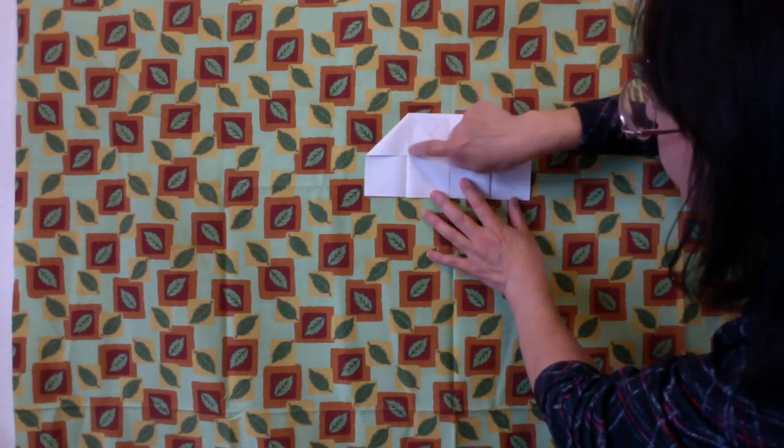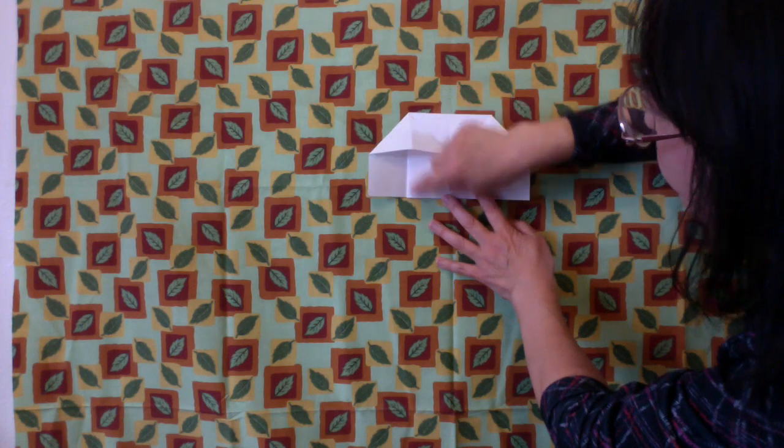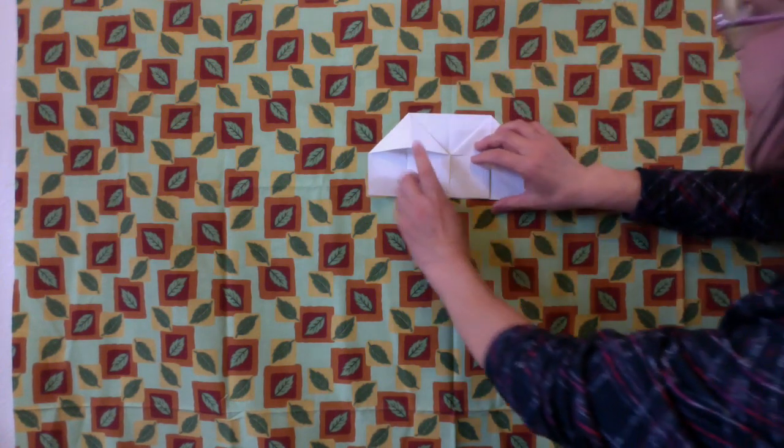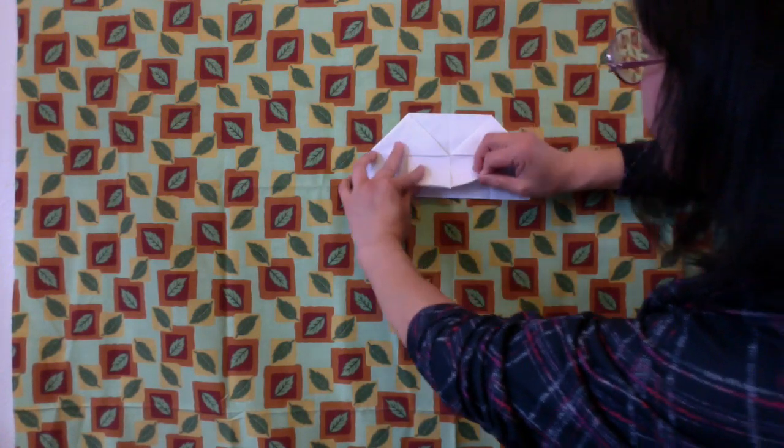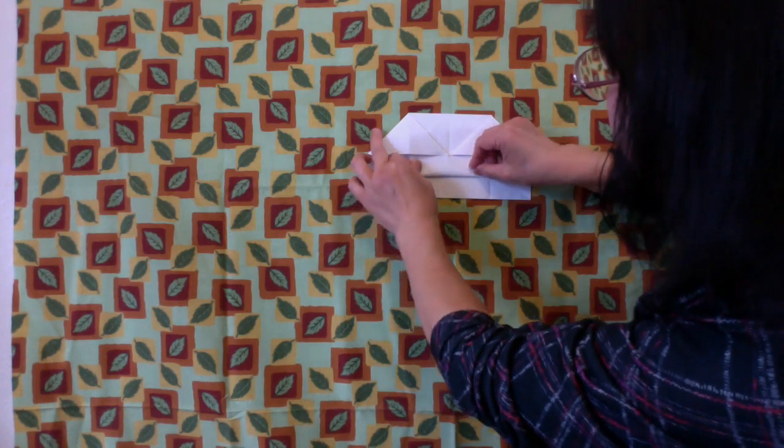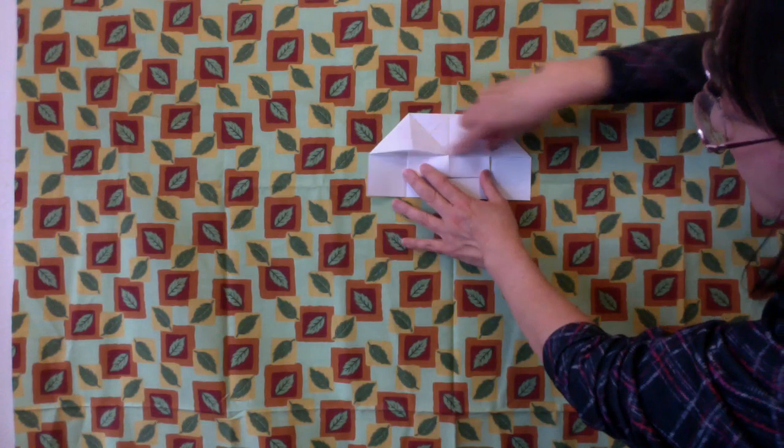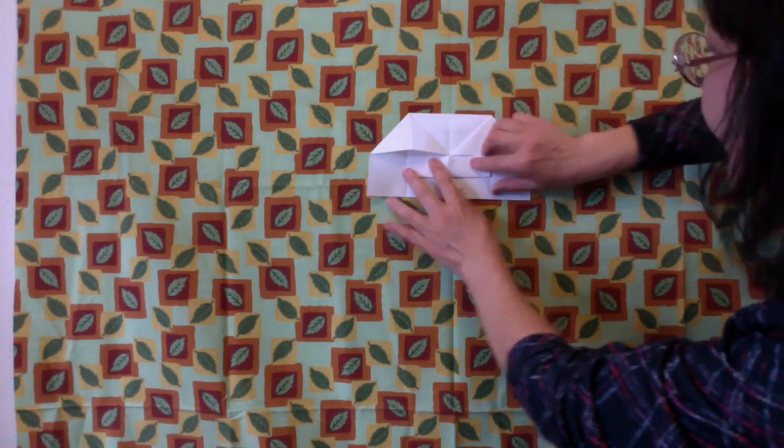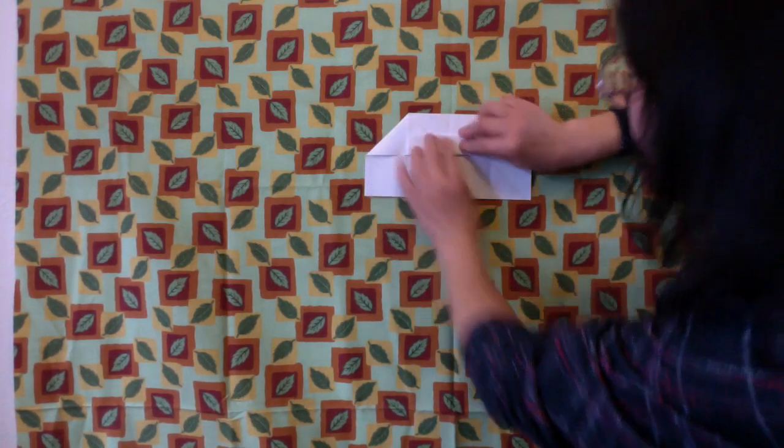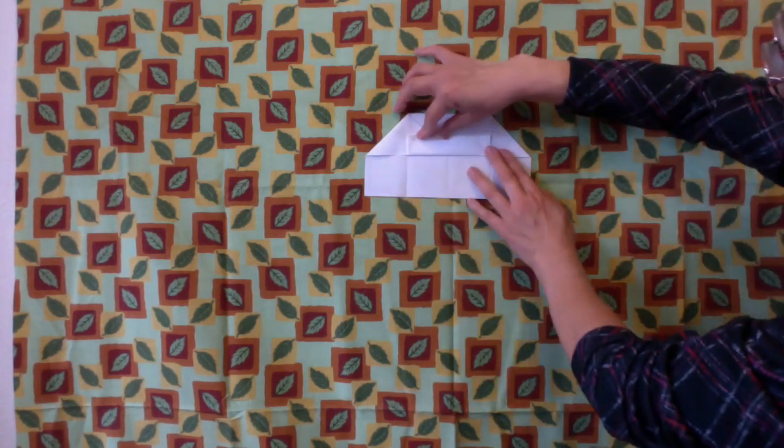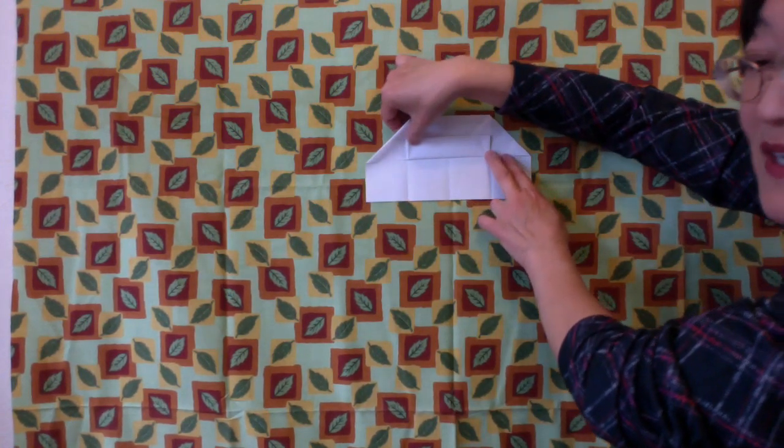Okay make sure this top center line and the bottom center line matches. Okay then we will fold this bottom up to the bottom of the roof of the house. And then fold it again. Okay one side is done.